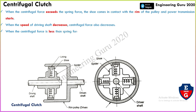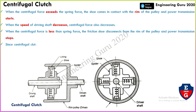When the centrifugal force is less than the spring force, the shoe disconnects from the rim of the pulley and power transmission is stopped. Whenever the driving shaft speed decreases, the centrifugal force is less than the spring force, so the shoe moves inward and power transmission is stopped.